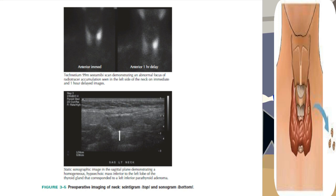For patients undergoing a thyroid lobectomy and isthmusectomy, the thyroid gland is mobilized to the contralateral side of the trachea and divided, and the cut edge of the contralateral lobe is over-sewn. For total thyroidectomy, anteromedial mobilization of the contralateral thyroid lobe is begun. Parathyroidectomy is indicated for treatment of primary, secondary, and tertiary hyperparathyroidism (HPT). Approximately 85% to 90% of patients with primary HPT have a single adenoma, whereas patients with secondary and tertiary HPT have parathyroid hyperplasia.